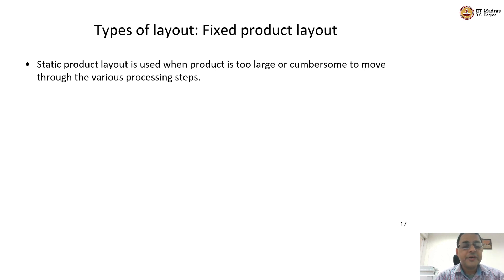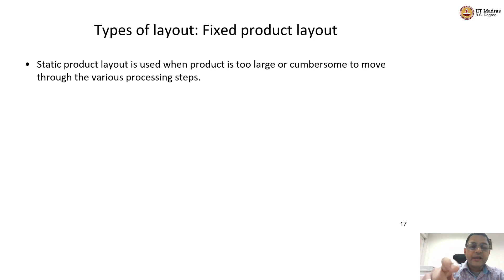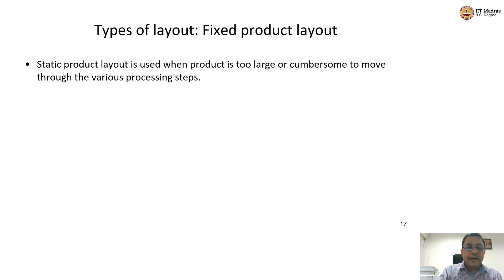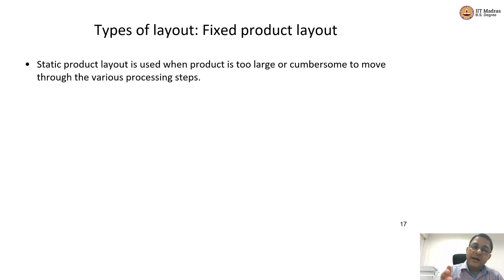When you visit a restaurant, do you move? In a buffet you do move. In a buffet, the food is arranged in a product layout sequence — going from salads to appetizers to main course to dessert. Sometimes it can also be a process layout, where all appetizers are kept together, all main courses together, and main courses split between veg and non-veg. This allows you flexibility — you can start with dessert, then go to appetizers. So some buffets also have a process layout.